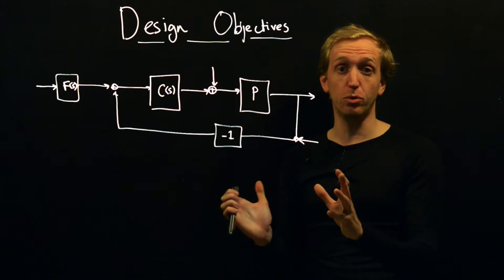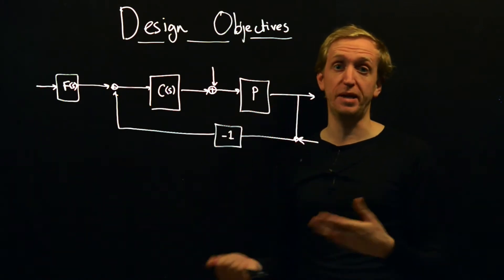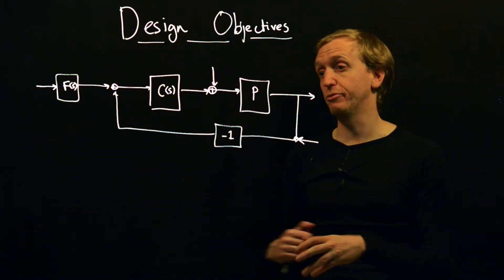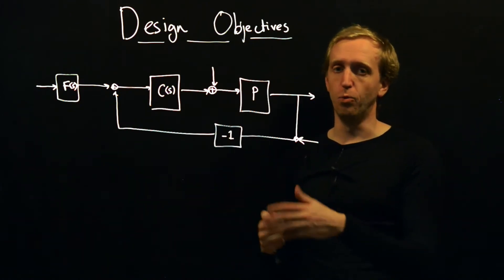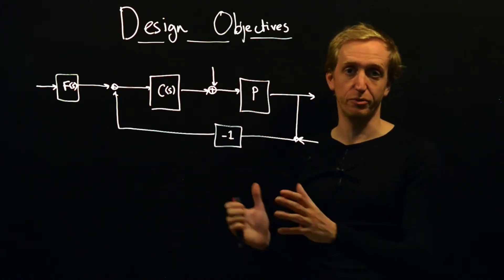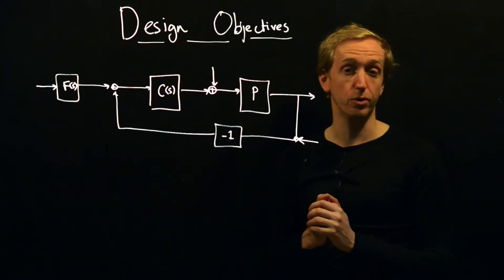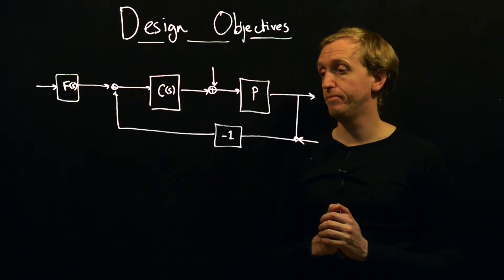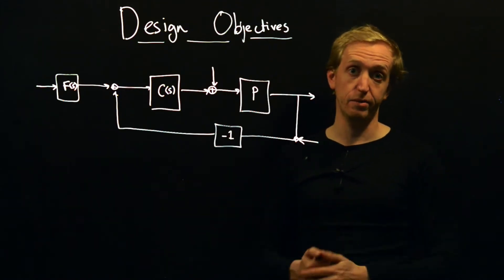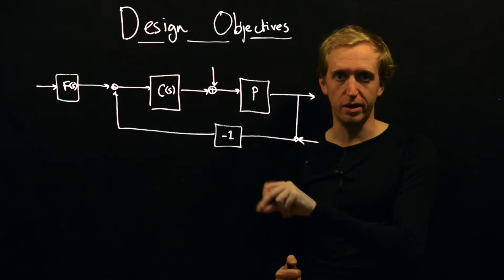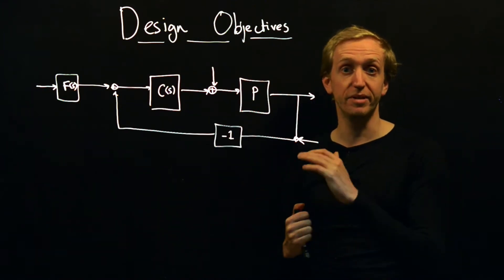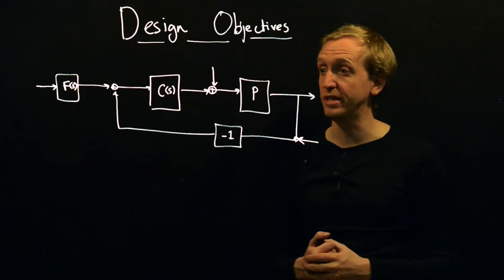So we're going to start off just by talking about this standard setup, explaining what all the various bits mean. We've got some blocks and signals and we'll try and understand what they are and why this is a standard framework for control system design. Then we'll list out some design objectives, and then in a set of lectures to come we'll drill into each of these objectives and understand them a bit more deeply.